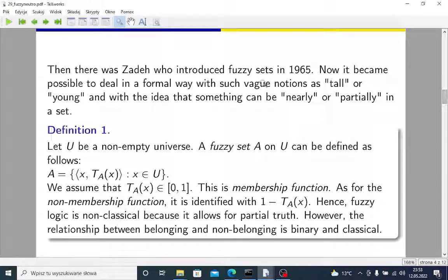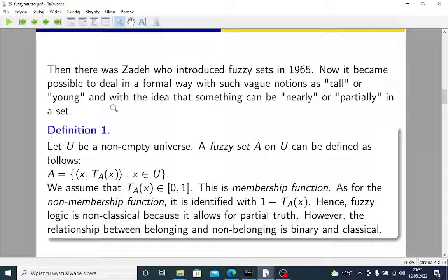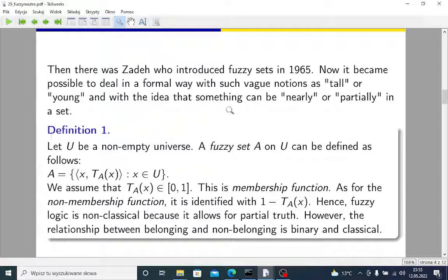It was Zadek who introduced fuzzy sets in 1965. This was a big step, because now it became possible to deal in a very formal, mathematical way with such general and unclear notions as tall or heavy or young, and with the idea that something can be nearly or partially in a set, in a given set.